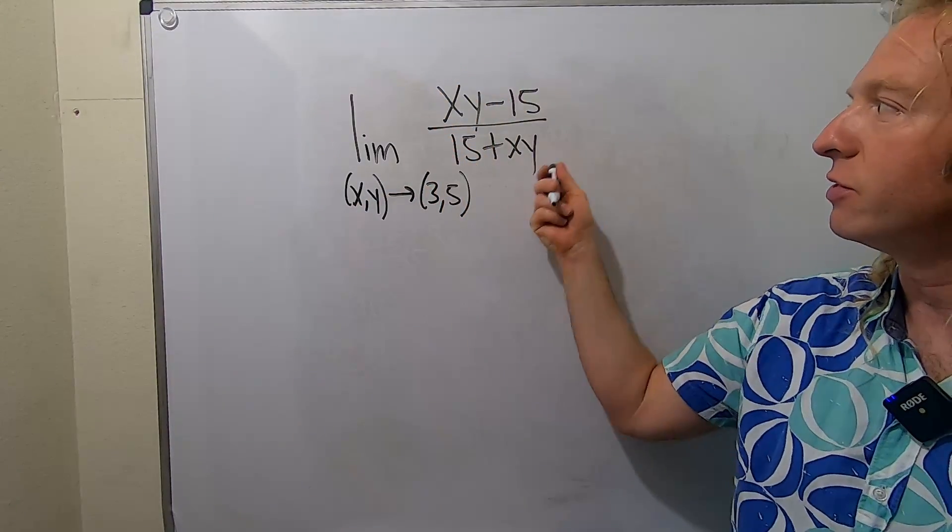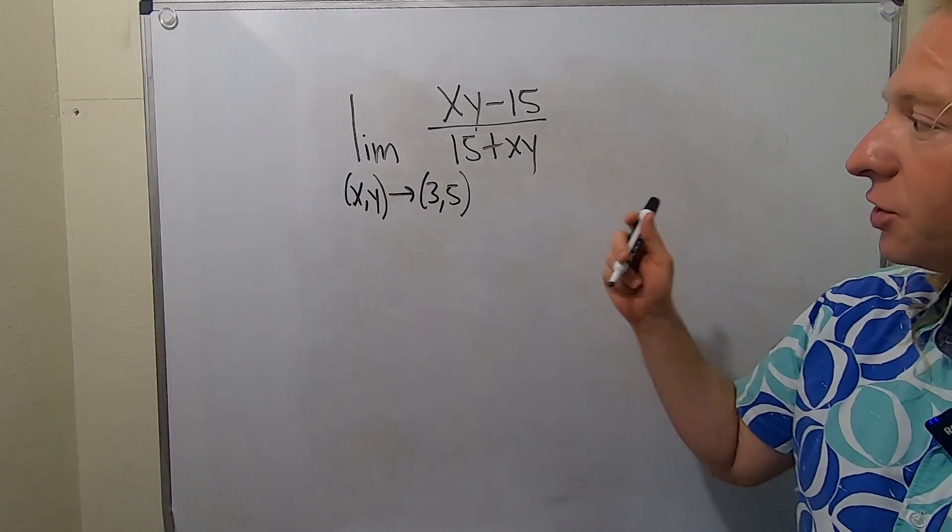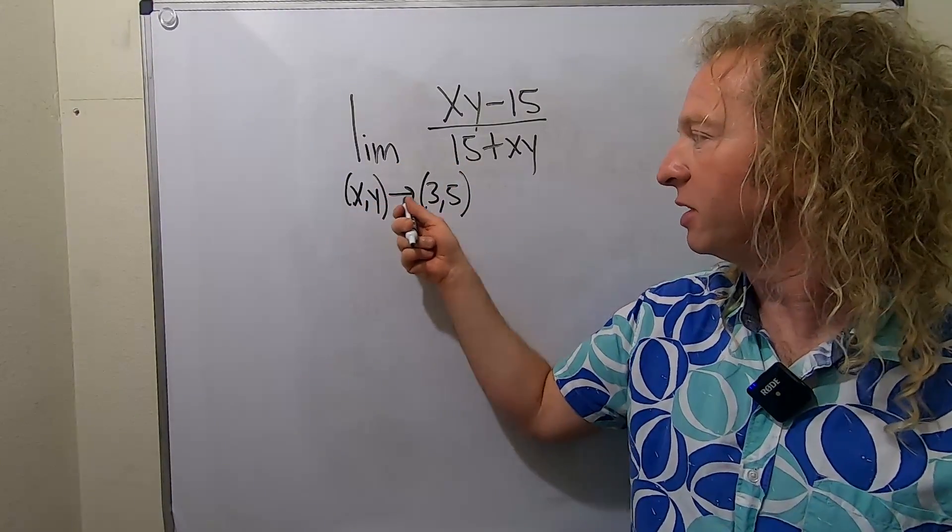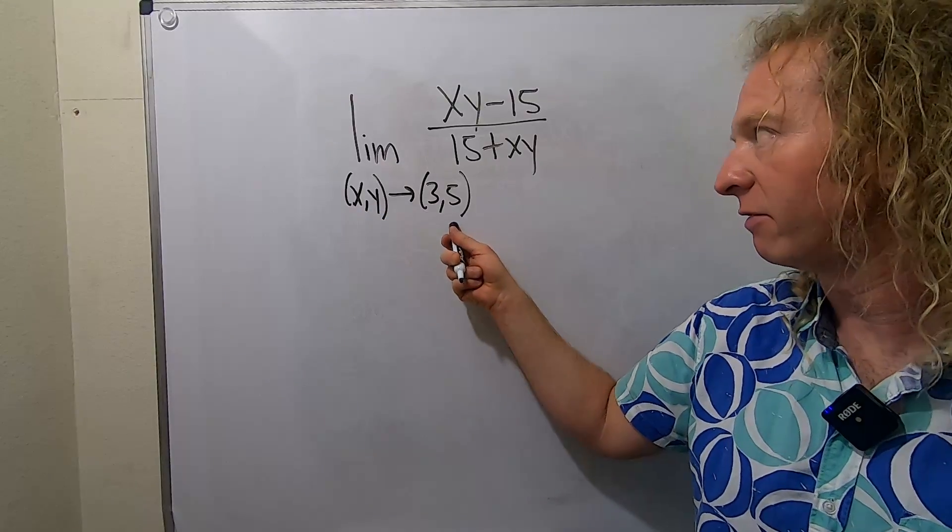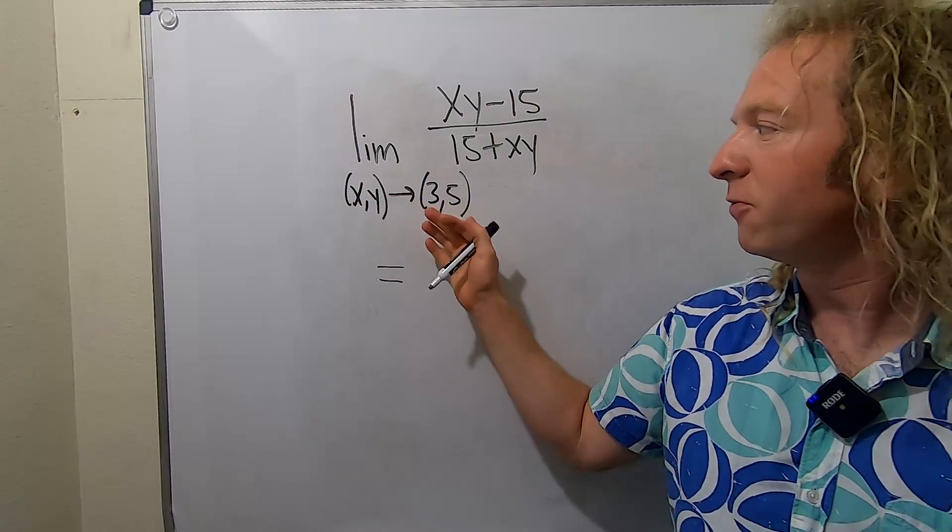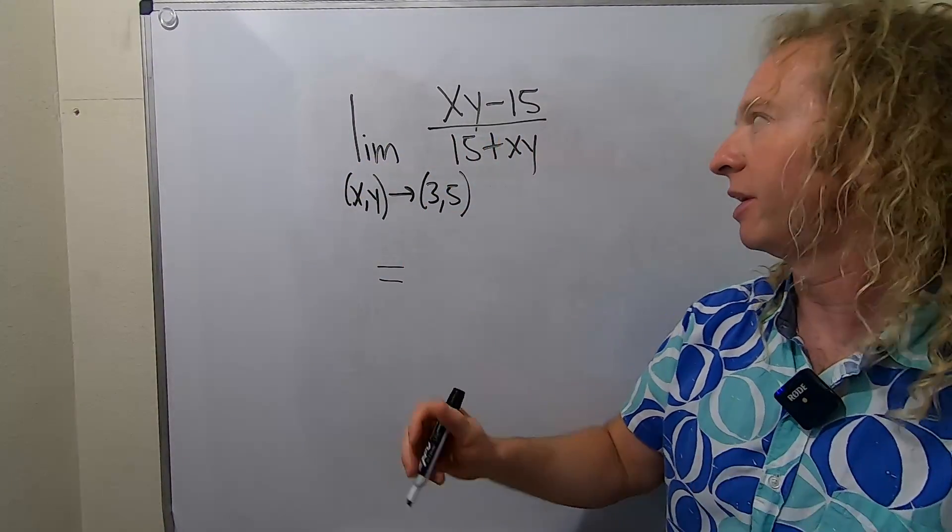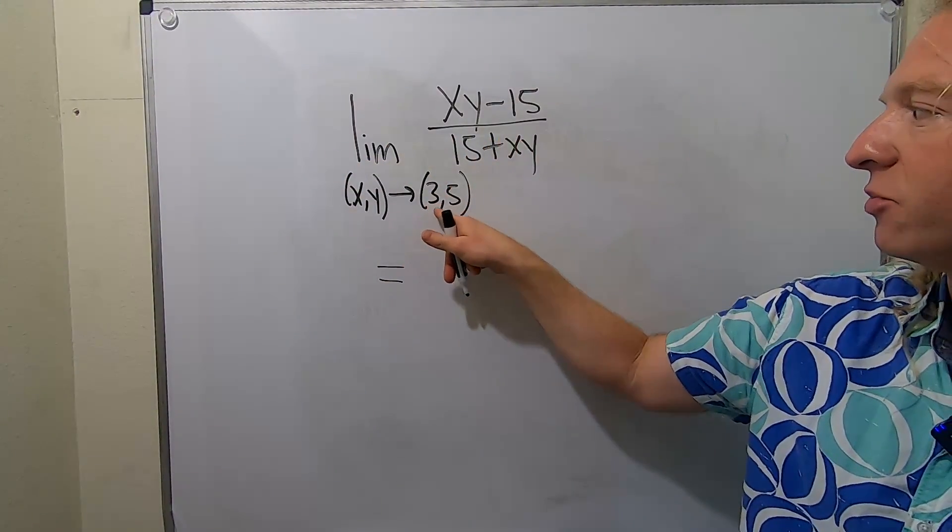Let's try to plug in the numbers, so x will be equal to 3 and y will be equal to 5. If we get an answer, we're done. This is equal to, as before like in calc 1, when you plug in the numbers you drop the limit sign. So this will be x is 3, y is 5.